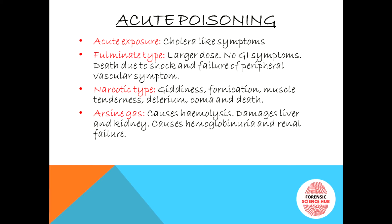In the fulminate type, death occurs due to shock and failure of the peripheral vascular system. The third type is the narcotic type, with symptoms including giddiness, formication, muscle tenderness, delirium, coma, and death. The fourth type involves arsine gas, which causes hemolysis and damages the liver and kidneys. Arsine gas is the vapor form of arsenic, formed when arsenic combines with hydrogen. It causes hemoglobinuria — hemoglobin found in the urine — and renal failure, with black-colored urine.